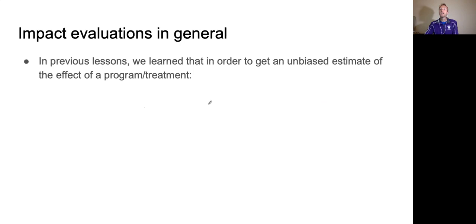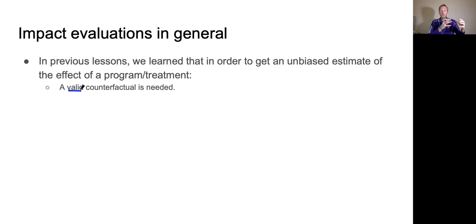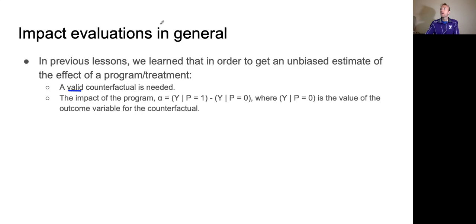Remember that in any impact evaluation, to get an unbiased estimate of the effect of a program or treatment, we need a valid counterfactual. The RCT creates a valid counterfactual group — the control group — because they're randomly assigned, so their averages are identical to the treatment group except for access to the treatment. Written mathematically, alpha is the impact estimate: it is Y conditional on P equals one, minus the value of what it would have been if they didn't get the program — that is, Y conditional on P equals zero, the counterfactual.